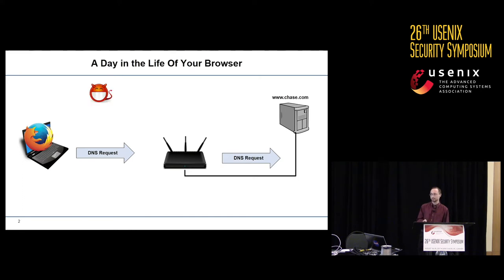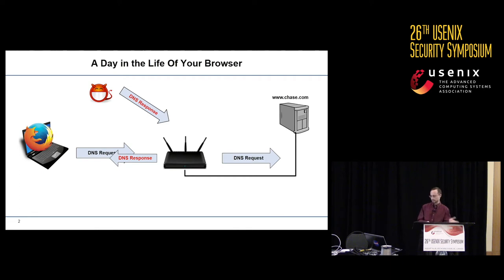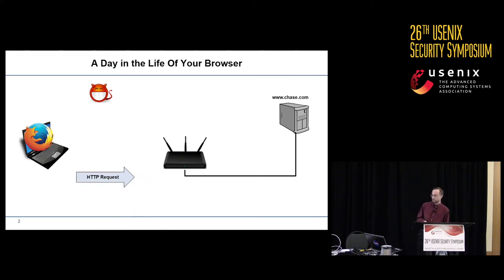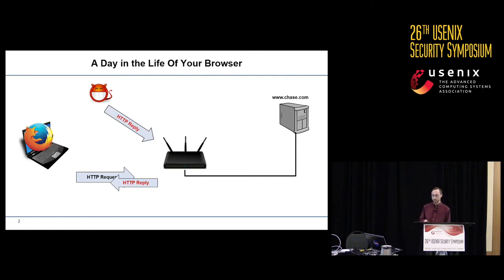Supposing there's an attacker in your network, they can observe that DNS request, create a forged response pointing chase.com to some random location on your local network, and that response will be accepted by your web browser, which then attempts to connect to that host, issuing an ARP request. The attacker observes and can create a forged response pointing to itself, which is accepted without question, resulting in an HTTP request to the attacker who creates a forged chase.com page. Once you enter your credentials into that web page, you're pwned.